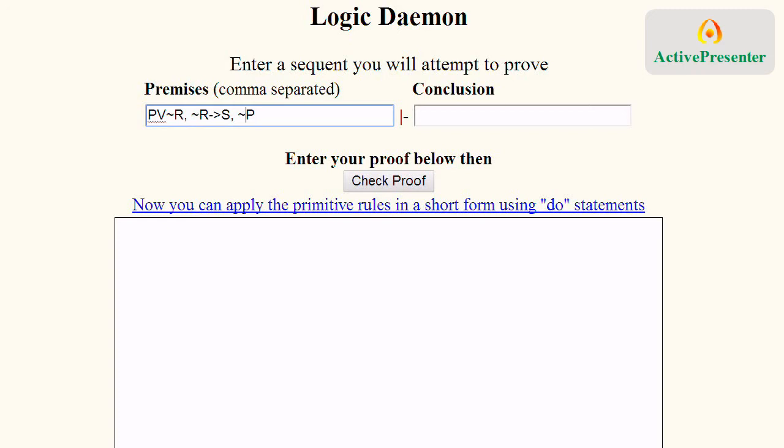Notice this should be lowercase. The wedge is the V, tilde is on the keyboard, the arrow is just a dash and the greater than sign. And then the conclusion we put on the other side of the turnstile, so that's going to be S.